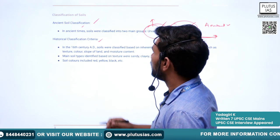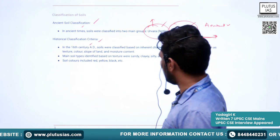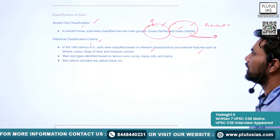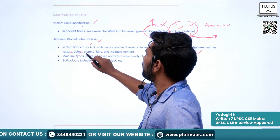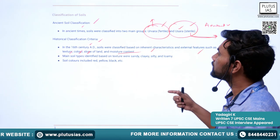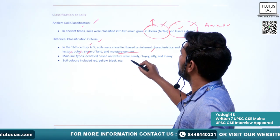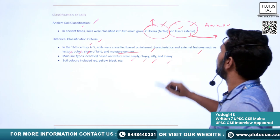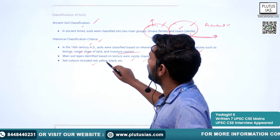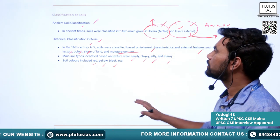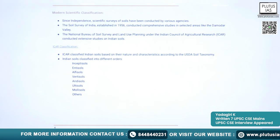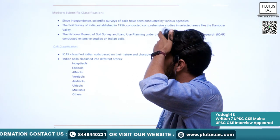In the medieval classification, especially in the 16th century AD, soils were classified based on inherent characteristics and external features such as texture, color, slope of land, and moisture content. Based on these factors, major soil types were decided as sandy, clayey, silty and loamy soils. Soils also occurred in red, yellow and black colors.